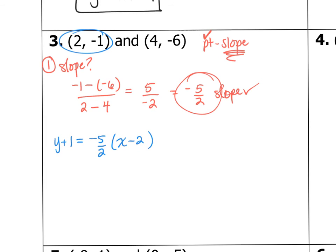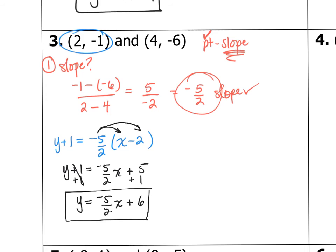switch it into Y equals MX plus B by solving for Y. So Y plus 1 is equal to negative 5 halves X plus 10 over 2, which is 5. Subtract 1 from both sides to get Y is equal to negative 5 halves X plus 6. And you can definitely check by putting X and Y into this equation and see if it makes a true statement.